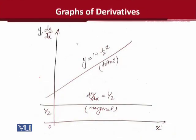This is a graph which contains two variables on the y-axis. The x-axis has the independent variable as usual. But on the y-axis, we don't have simply the variable y, which is the dependent variable. Rather, we have the term dy over dx, which is the derivative of the function y.